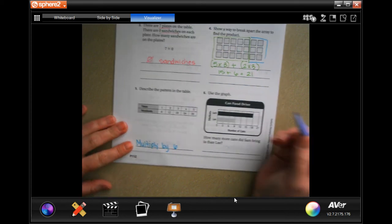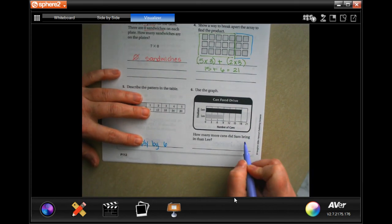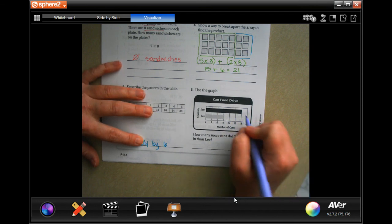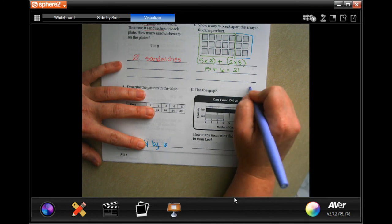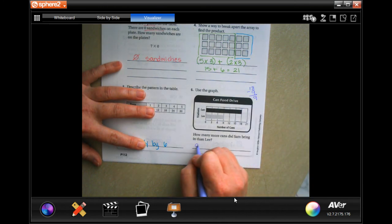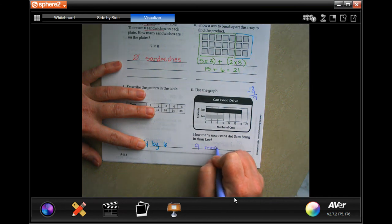And last but not least, how many more cans did Sam bring in than Lee? Well, Sam brought in 18, Lee brought in nine. So 18 minus nine is nine. So nine more cans.